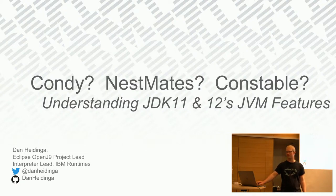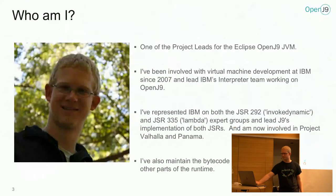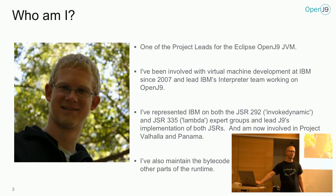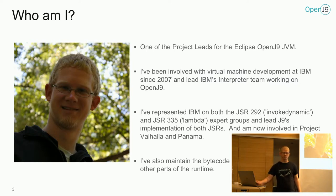I'm here today to talk about Condi, Nestmates, and Constable, taking a look at some of the JDK 11 and 12 JVM features. I'm Dan Heidinga, one of the OpenJ9 guys. OpenJ9 is a JVM from IBM, now at the Eclipse Foundation — it was open-sourced last year. The examples I'm going to talk about today I've run on OpenJ9, but there's nothing here that's particularly OpenJ9 specific.